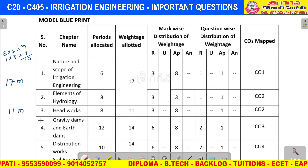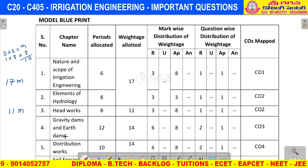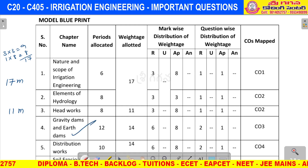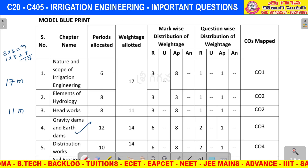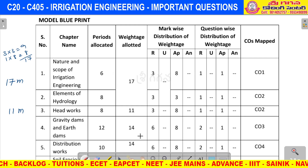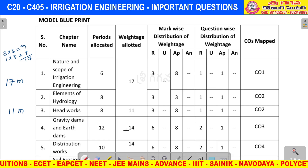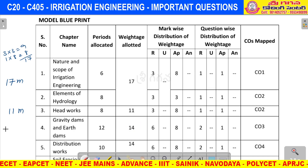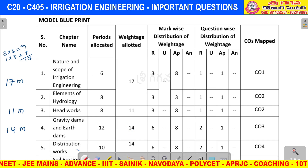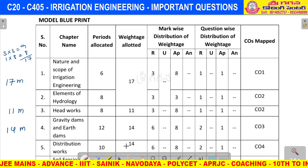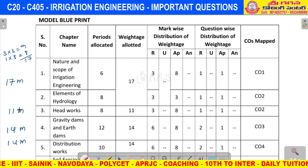Next, the fourth unit — gravity dams and earth dams — a very very important unit, not only from an exam point of view. The fourth unit has two short answers and one essay question, so total marks are 14. Next, the fifth unit — also a very very important unit — two short answers and one essay, that is 14 marks.